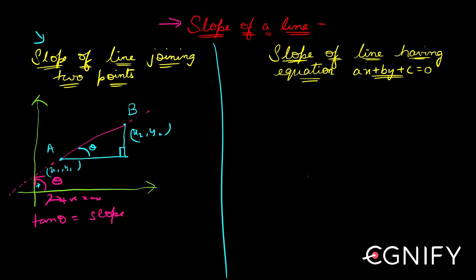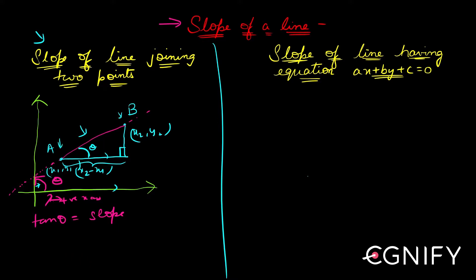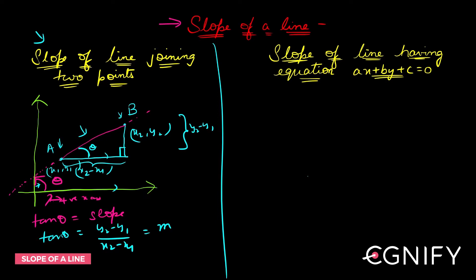Let me construct a right-angle triangle. If this angle is theta, then this angle here is also theta, because both sides are parallel and the pink line acts as a transversal. The length of the horizontal side is x2 minus x1, and the vertical side is y2 minus y1. So tan theta equals opposite over adjacent, which is (y2 − y1) / (x2 − x1). This is the slope, denoted by m.